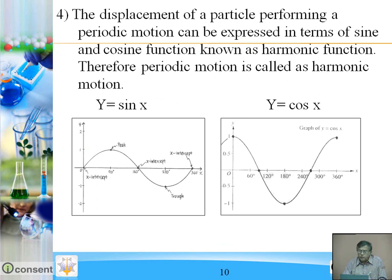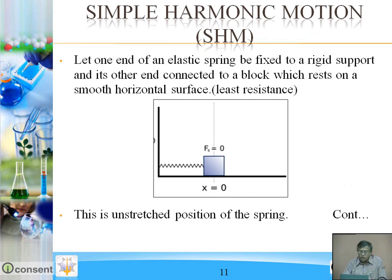The displacement of a particle performing a periodic motion can be expressed in terms of sine and cosine functions. Sine and cosine are trigonometric functions known as harmonic functions. Therefore, periodic motion is called harmonic motion.